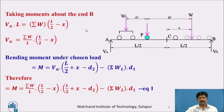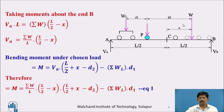We have to take a bending moment about B to find out the reaction VA. We will consider the two reactions and the resultant load W. Taking moment about B, VA into L equals the resultant of all loads, summation of W, into this distance, which is L/2 minus X. Therefore, VA equals summation of W divided by L, into (L/2 minus X).